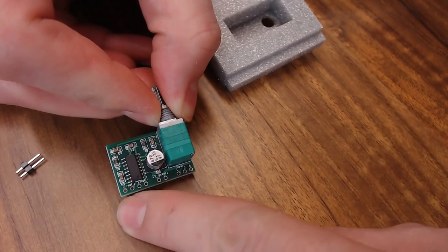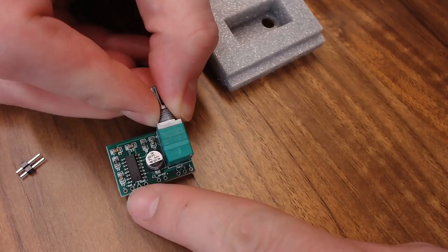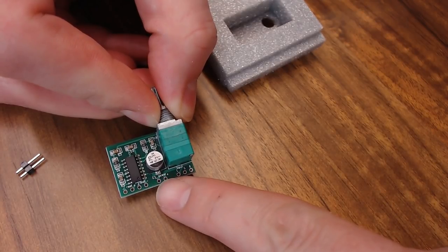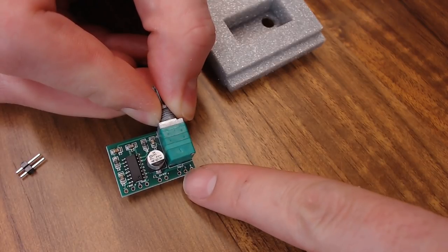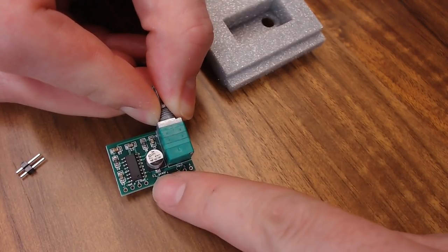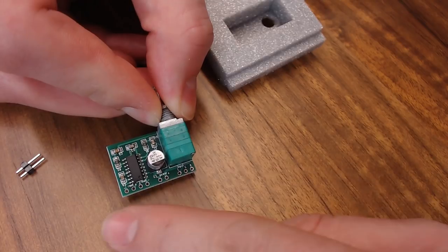So on this amplifier, you're going to have your speaker connections over here, these four. You're going to have your power in right here in the middle. And then you're going to have your audio in. You have your left, your right, and your ground. So we need four pins, two pins, three pins. We're just going to solder all those on.